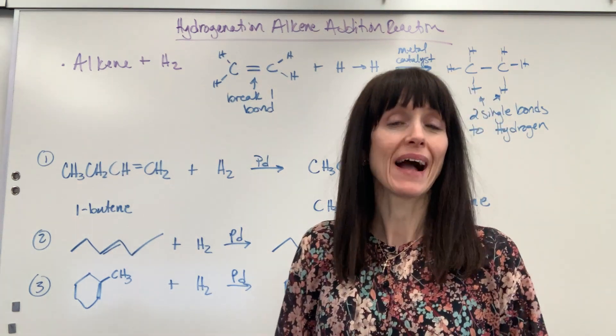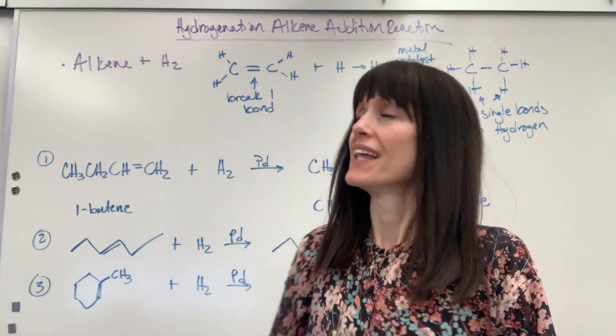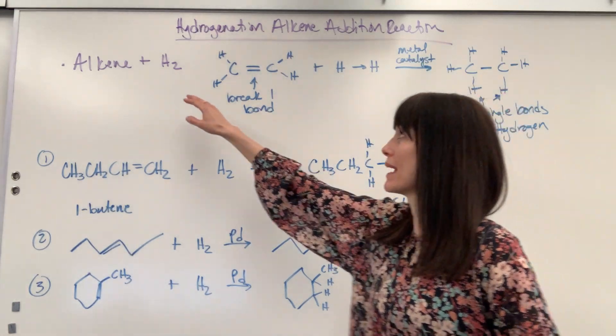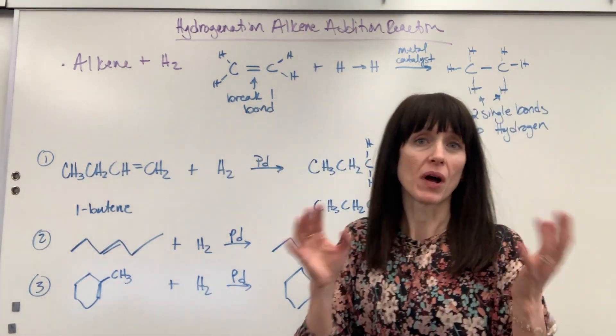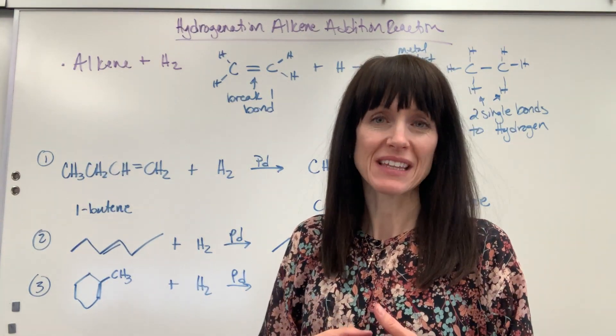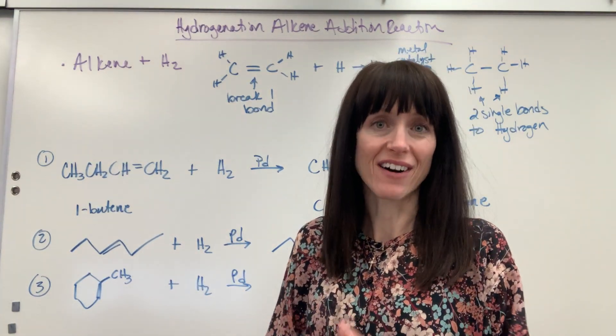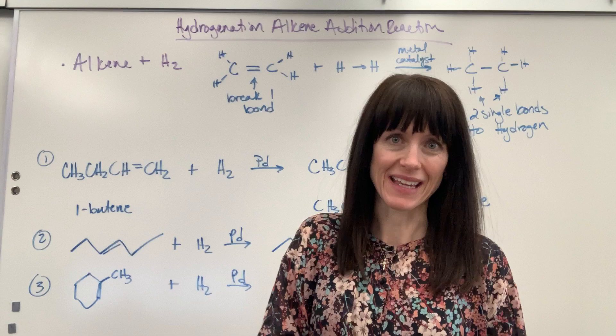Hi, we're going to talk about hydrogenation reactions. These are going to be alkenes that we add hydrogen to and it's going to make an alkane. Long and short of it, what we're doing really is saturating the alkenes to make them alkanes.